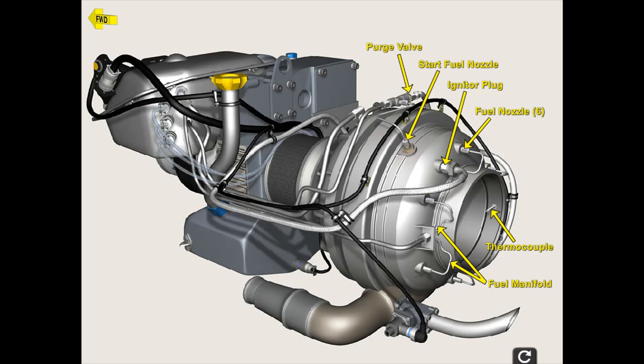Ignition is furnished by a separate pressure atomizing fuel nozzle and igniter plug. The igniter plug, fuel nozzle, and main fuel manifolds are installed in the combustion chamber. The thermocouple is located in the APU exhaust and measures exhaust gas temperature, EGT.